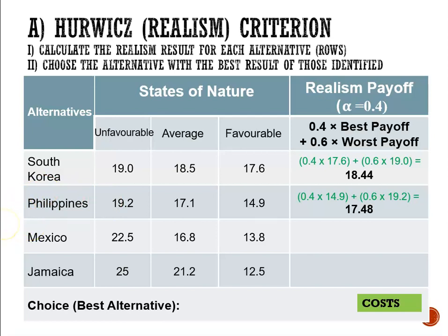For Mexico, we will have 0.4 multiplied by the lowest cost of 13.8 million plus 0.6 multiplied by the highest cost of 22.5 million, giving us 19.02 million. And for Jamaica, we will have 0.4 multiplied by 12.5 million plus 0.6 multiplied by 25 million, and that gives us 20 million.